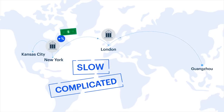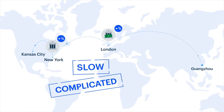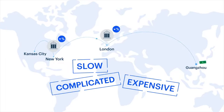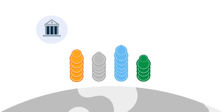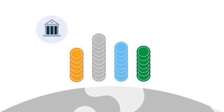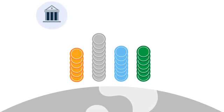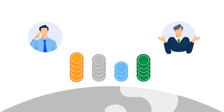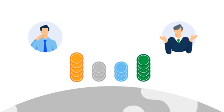Complicated. In many cases, funds move through multiple intermediary banks before reaching their destination. Expensive. Each intermediary takes a percentage of the transaction in fees. As money moves around the world, the fees pile up, and the business in Kansas City loses more and more of its hard-earned cash to unnecessary middlemen, as does the supplier in China.